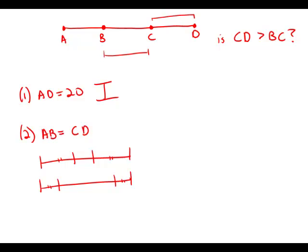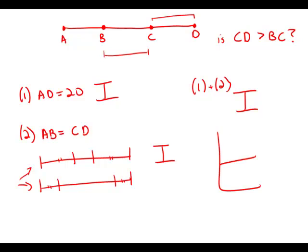Now if we combine the two statements, that doesn't really get us anywhere. Statement 1 is such a useless statement that even knowing the total length is 20, we could still have either case. It doesn't matter what the total length is — we could have the middle segment much smaller than the others, or much larger. So even together, the statements are insufficient, and the answer is E.